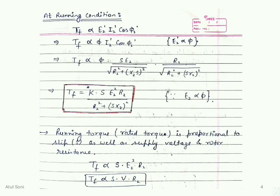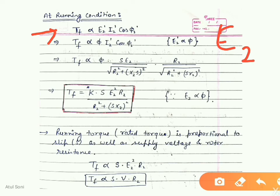At running condition, the torque developed is still proportional to E2' · I2' · cos φ2', but all three parameters are at running condition. The rotor-induced EMF at running condition is slip times the standstill EMF, that is sE2. Similarly, the rotor current and power factor are modified by the slip.